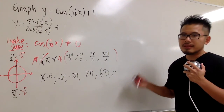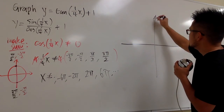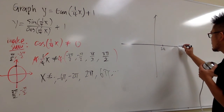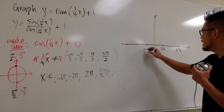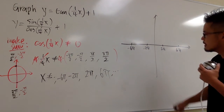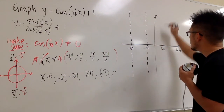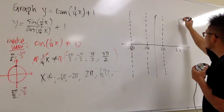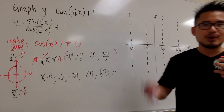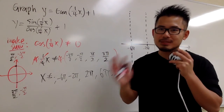These excluded values tell us the domain and the vertical asymptotes, so we are ready to graph. Let's set up the axes with 2π, 6π on the positive side and negative 2π, negative 6π on the negative side. The most important thing when graphing tangent, cotangent, secant, or cosecant is drawing those vertical dashed asymptote lines.